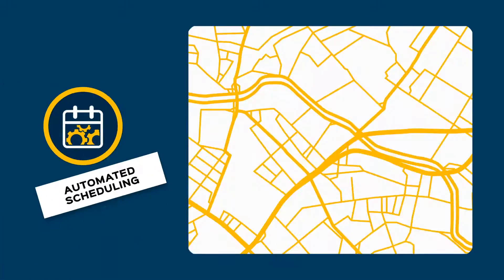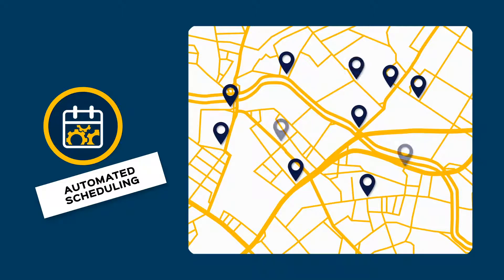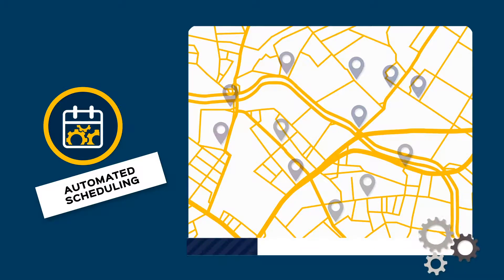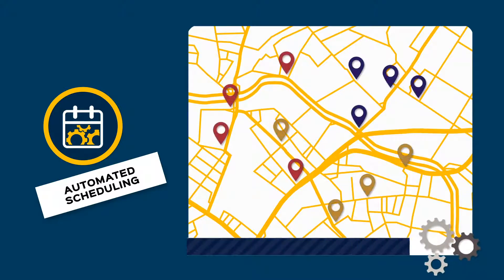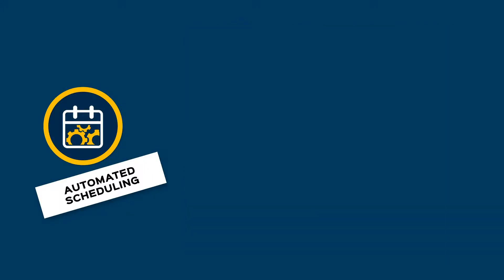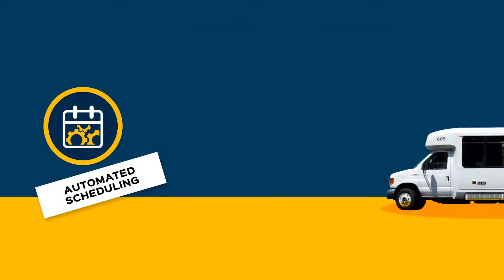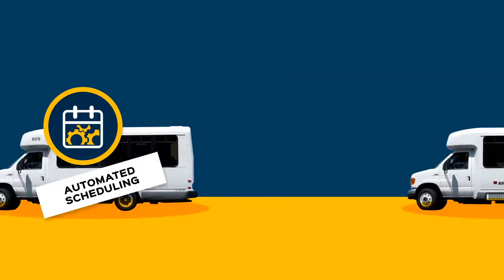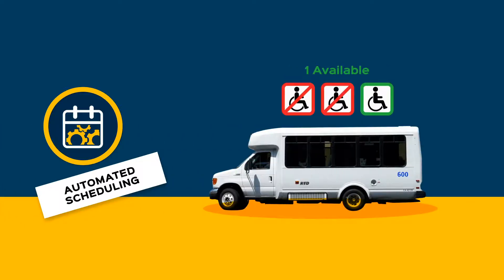Automated scheduling. Novus DR's advanced scheduling and routing algorithm seamlessly reschedules and redistributes trips throughout the day as delays are identified. It supports batch scheduling as well as individual trip assignments. Novus DR also recognizes limitations in vehicle capacity and travel rules and restrictions.